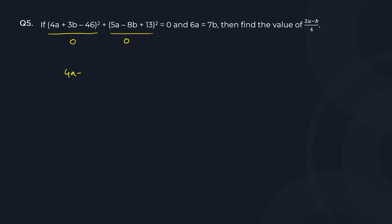So you have 4a plus 3b minus 46 equal to zero. This becomes 4a plus 3b equal to 46, and you'll get 5a minus 8b equal to minus 13.